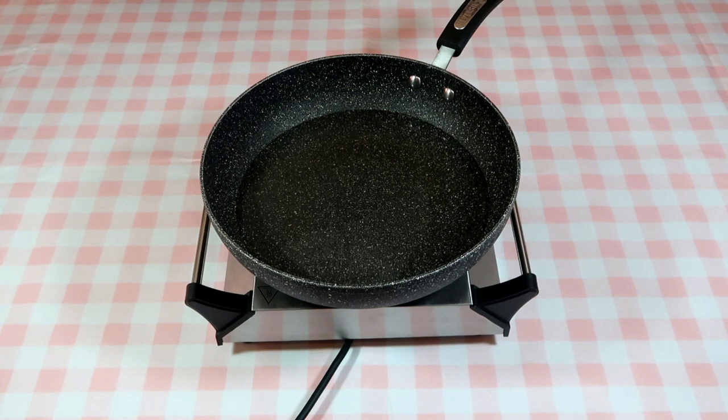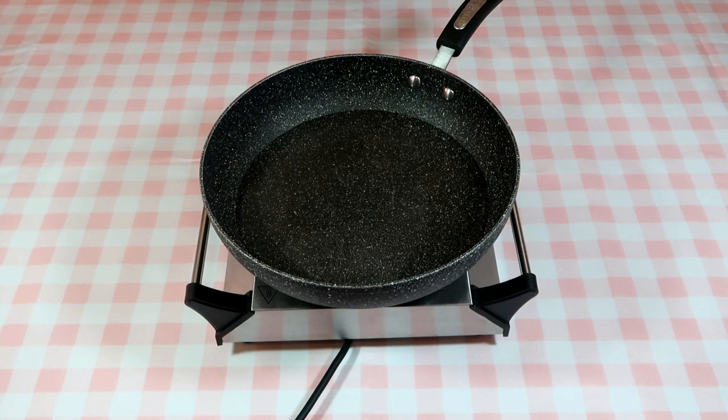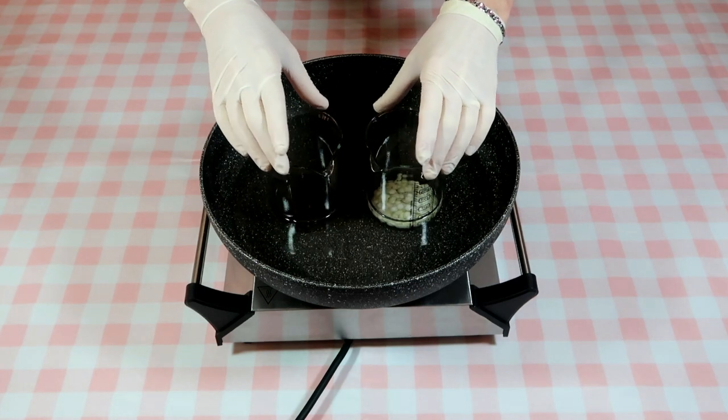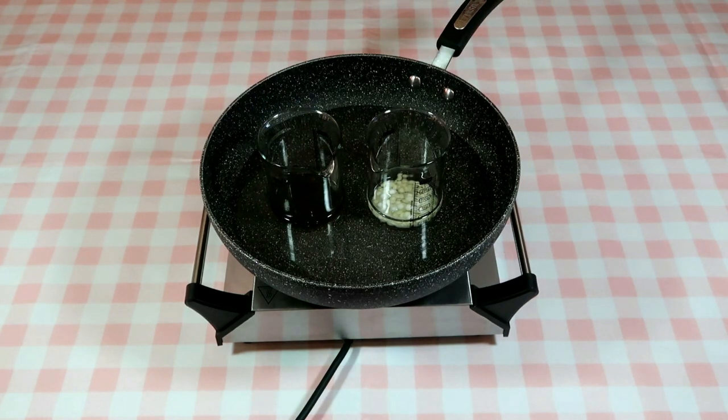Place both containers into a pan of simmering water. Allow the wax to heat through and melt, but don't allow it to boil. The whole process takes around 20 minutes.